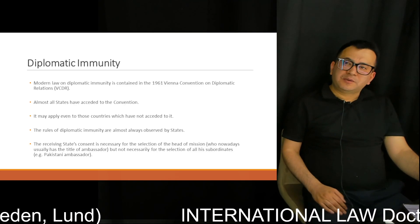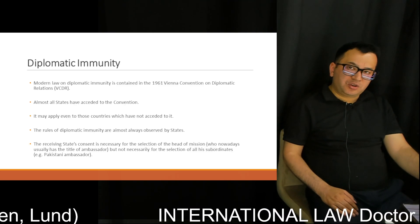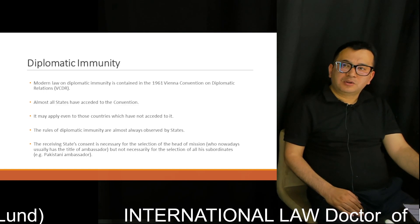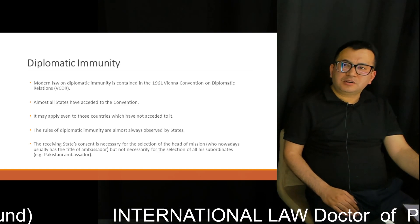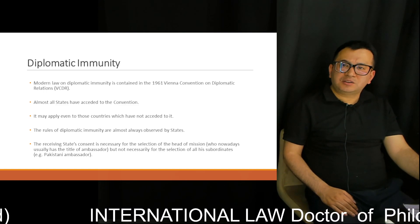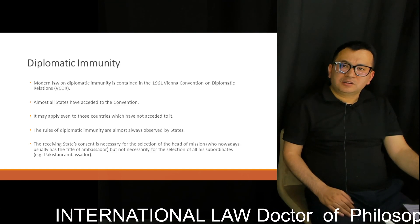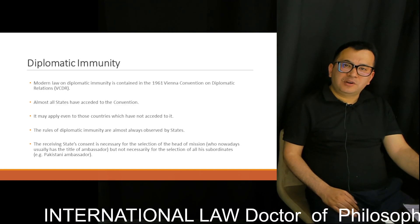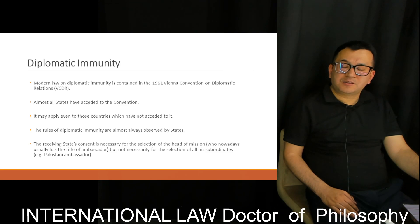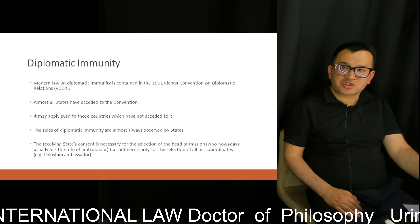The concept of diplomatic immunity is central to understanding diplomatic and consular law. Modern law on diplomatic immunity is contained in the 1961 Vienna Convention on Diplomatic Relations. Almost all states have acceded to this convention.